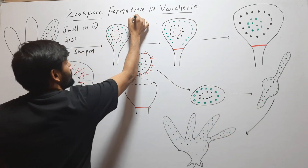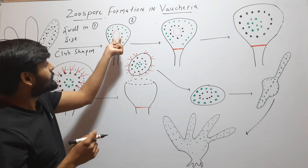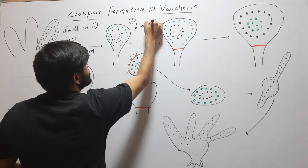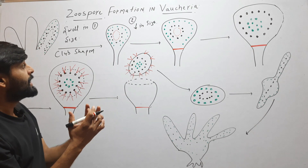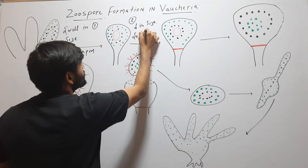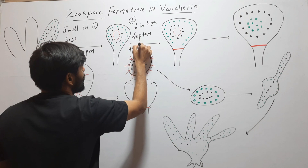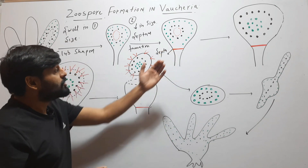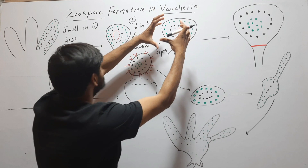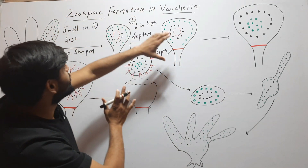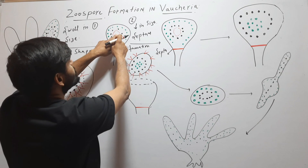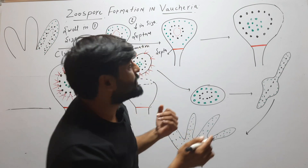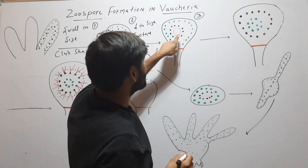In the second step, this vacuole will start decreasing in size, and there will be septum formation. The septa will separate the swelling portion from the rest of the filament. The vacuole decreases in size and the septum formation occurs — this is the second step.